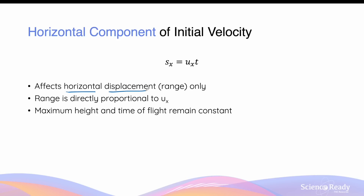The horizontal component of an object's initial velocity only affects the horizontal displacement, also known as the range of its projectile motion. Referring to the equation: sx (the range) equals ux times the time of flight. In this equation, range is directly proportional to the initial horizontal component of velocity. So if we double ux, the range will also double; if we half ux, the range will also half.